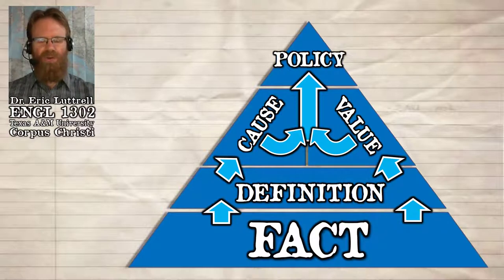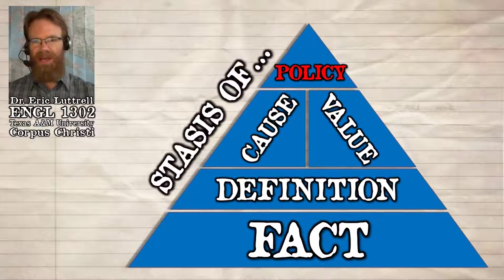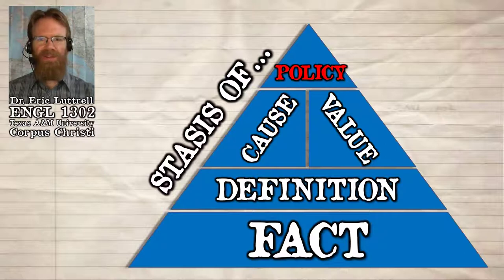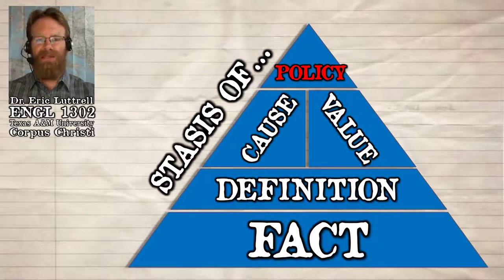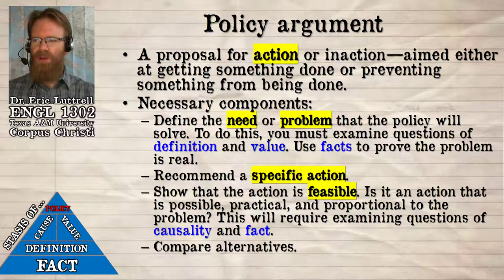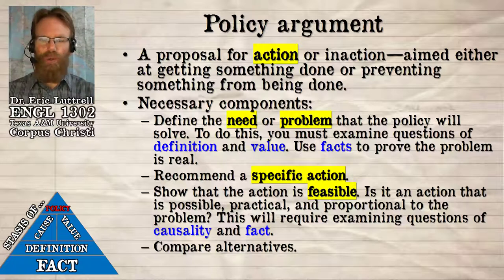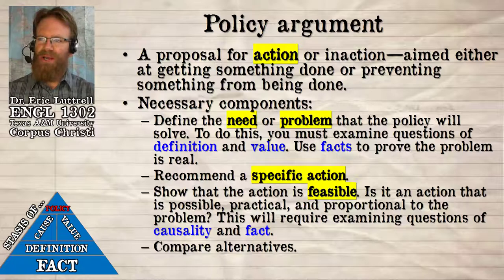Once all those other points of stasis support your policy, you can argue for a type of policy that might be as simple as saying people should eat more of this kind of food and less of that, or something as large as arguing for a bill that would become a law — shaping not just individual action but the actions of many people over a long period of time. A policy argument, sometimes called a proposal or the stasis of proposal, is a proposal for action or maybe inaction. It's aimed at getting something done or preventing something from being done.